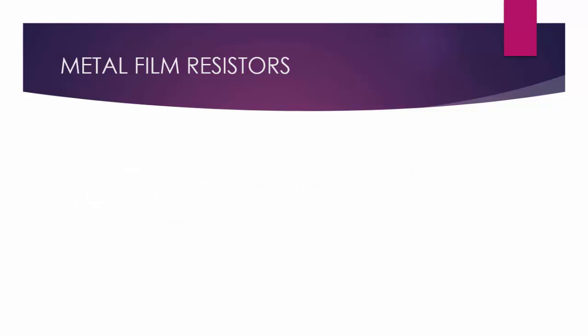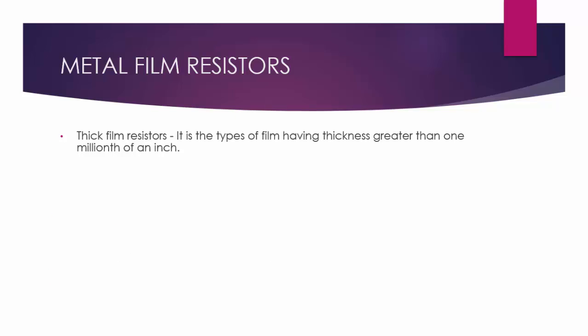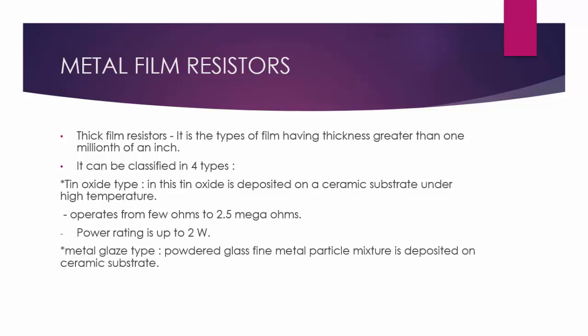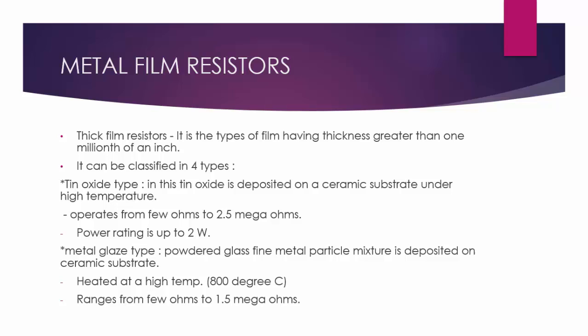The second part is the thick film resistor, where the film thickness is greater than one millionth of an inch, and it can be classified into four types. First is the tin oxide type, where tin oxide in vapor form is deposited on a ceramic substrate — ranging from 2 ohms to 2.5 mega ohms, with a power rating up to 2 watts. Second is the metal glaze type, where a powdered glass and fine metal particle mixture is deposited on a ceramic substrate, heated to 800°C. Resistance ranges from a few ohms to 1.5 mega ohms, power rated up to 5 watts.